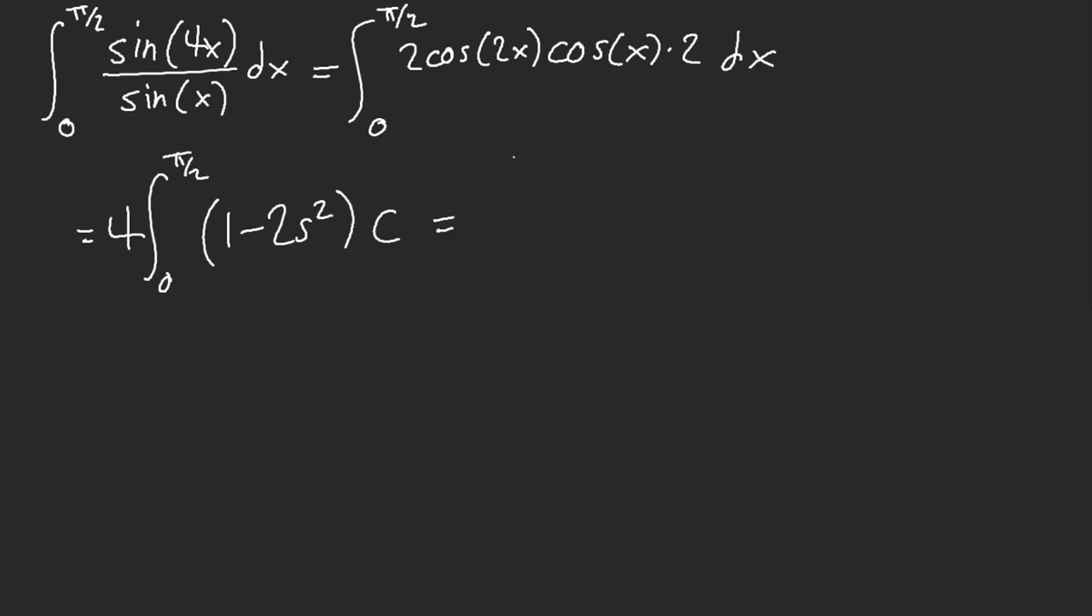Now, what is this? This is 4 from 0 to 1. This is 1 minus 2u squared. Oh, now it's easy.